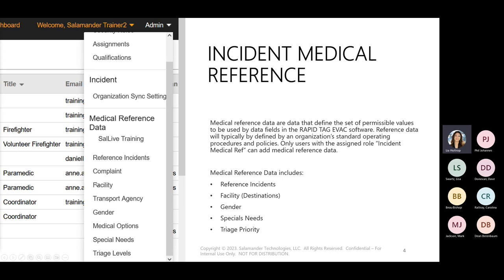Facilities is the next section. Under facility, this is regarding the destination field within RapidTag EVAC. Facilities are any destinations to which people could be sent — this is their final destination. You can put in shelters, hospitals, family centers, anything that you have as an evacuation-type site.